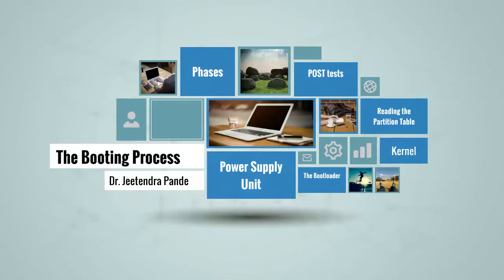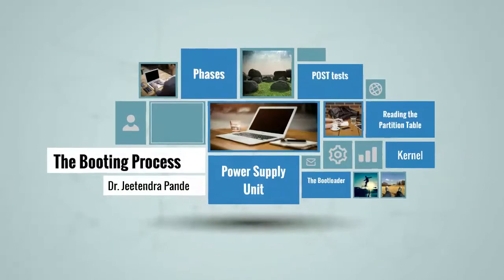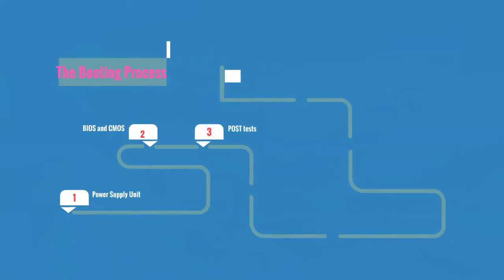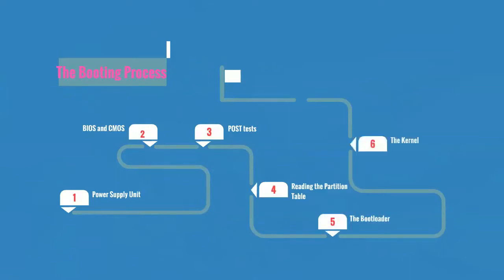The boot process of a modern system involves multiple phases. The following components are involved in the boot process, and they are each executed in this order: power supply unit, BIOS and CMOS, POST test, reading the partition table, the bootloader, the kernel, and OS kernel.